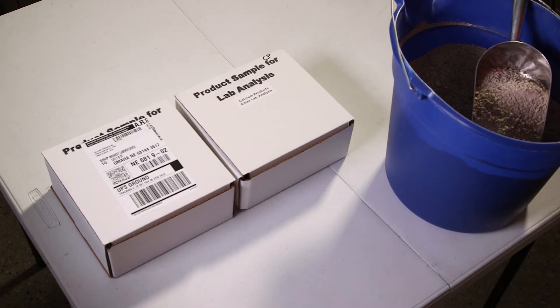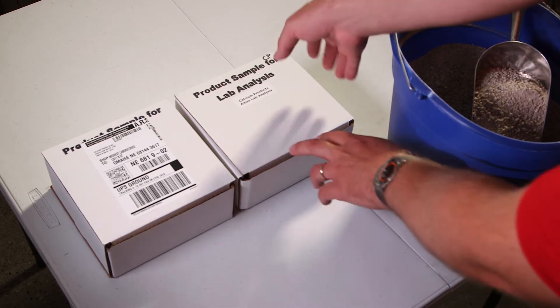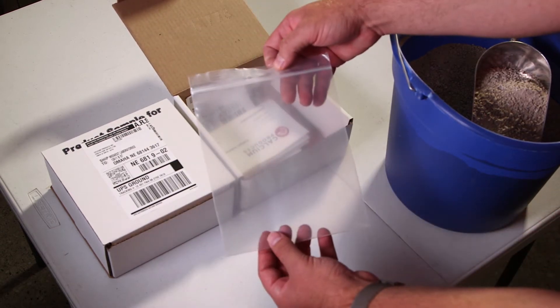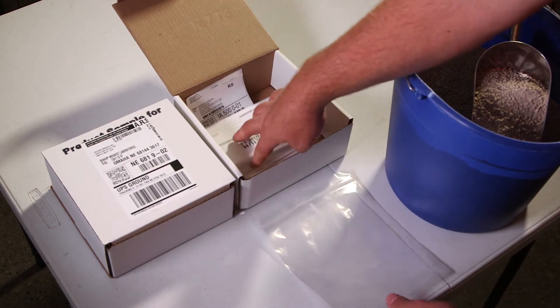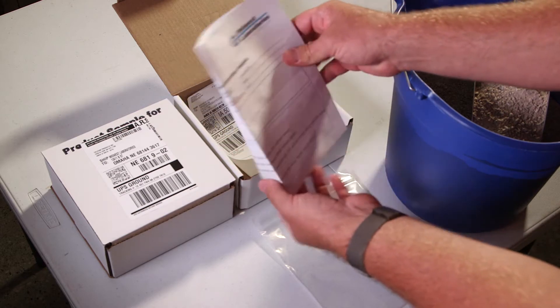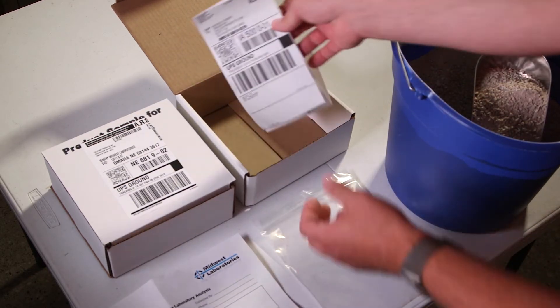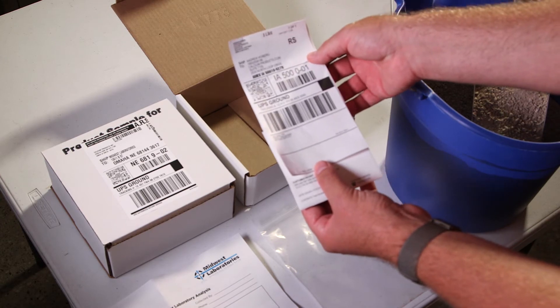When you request your 98G Challenge Kit, you'll receive two boxes inside of a larger box. Inside of each box, you'll find three items: a baggie for the sample, a submittal form for the sample, and a prepaid UPS mailing label.